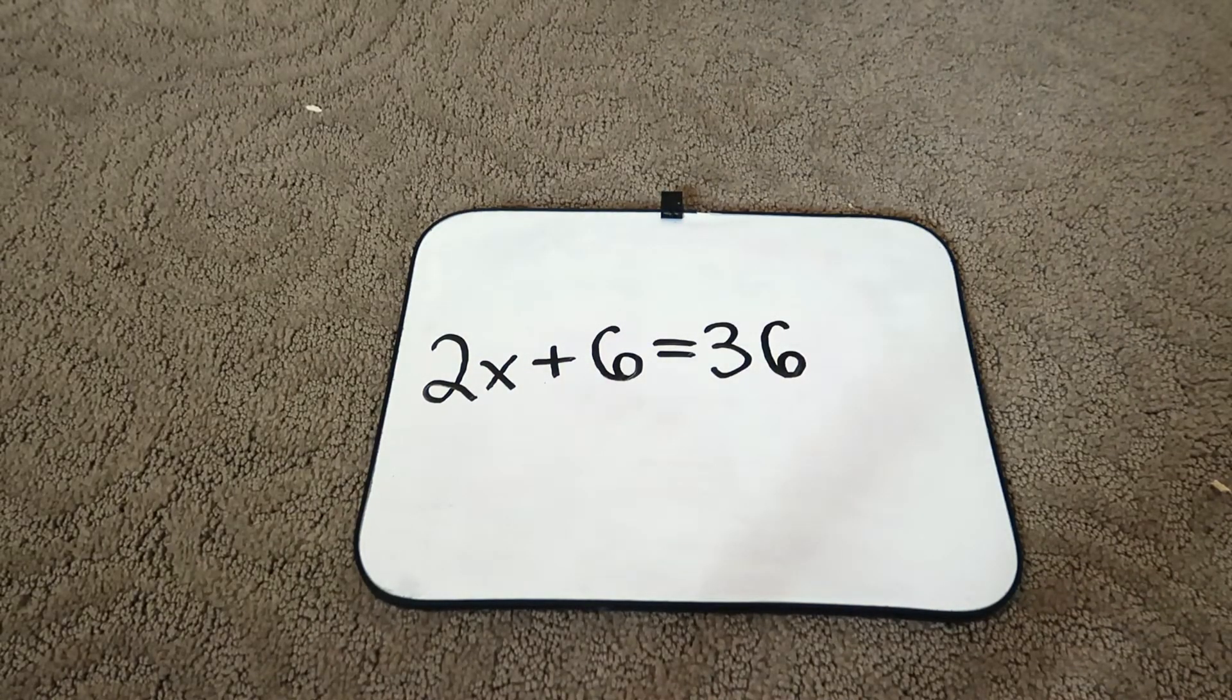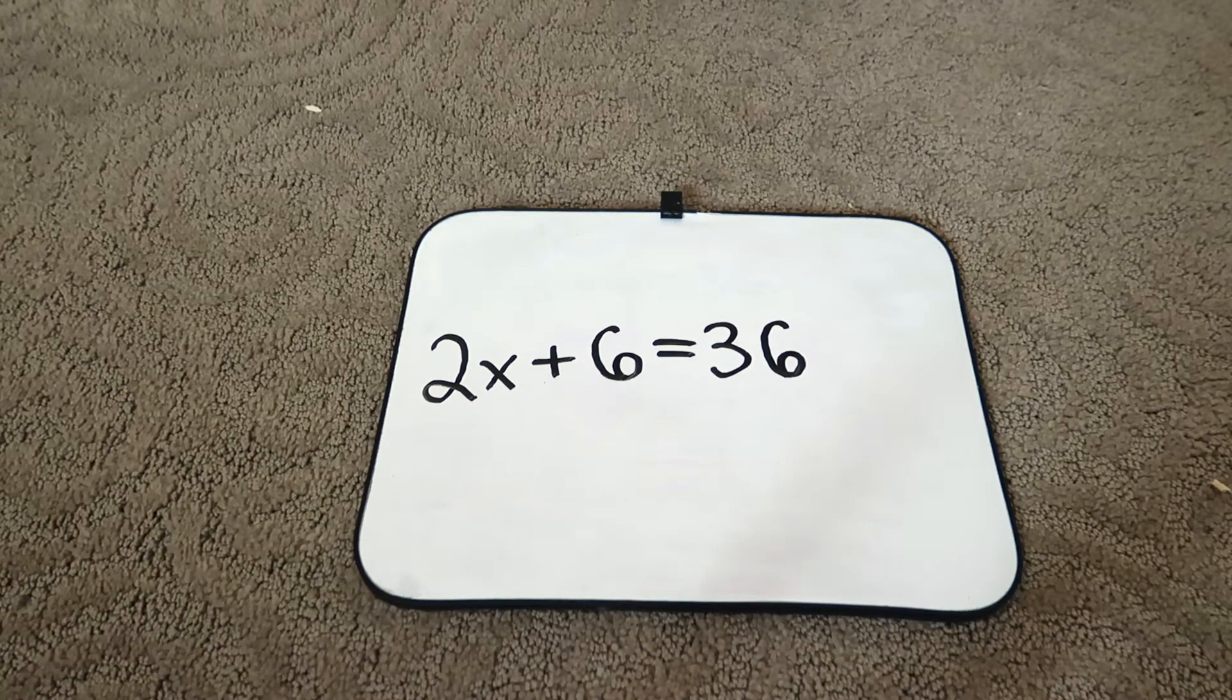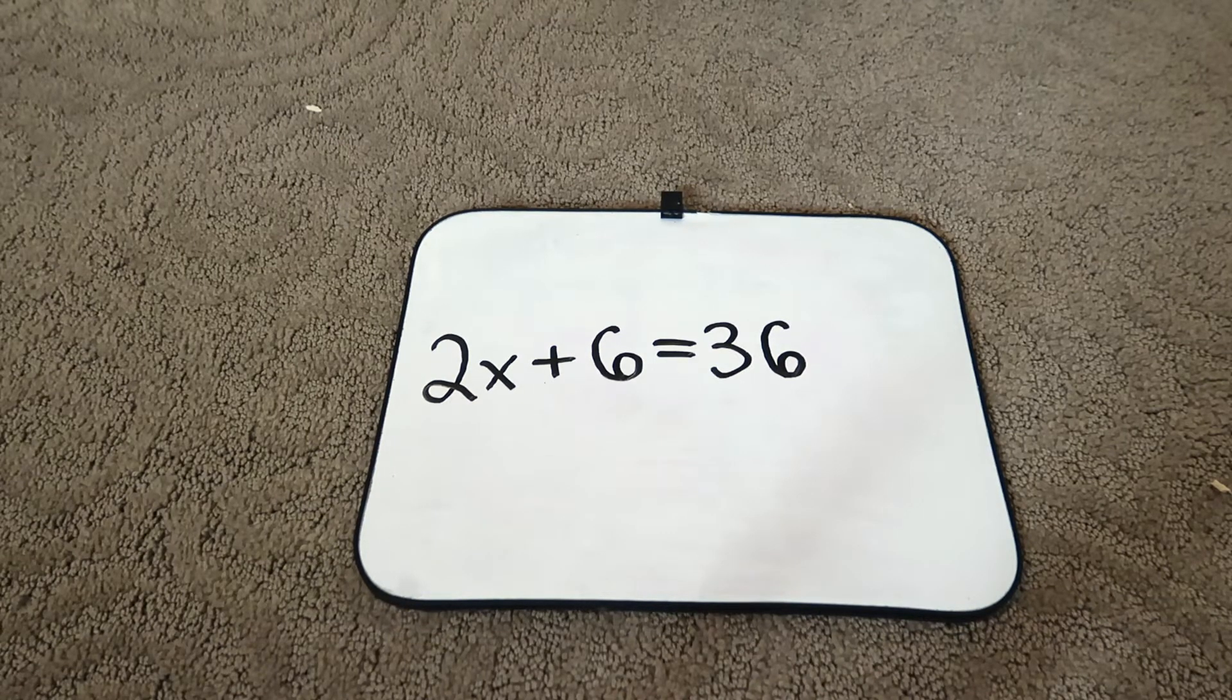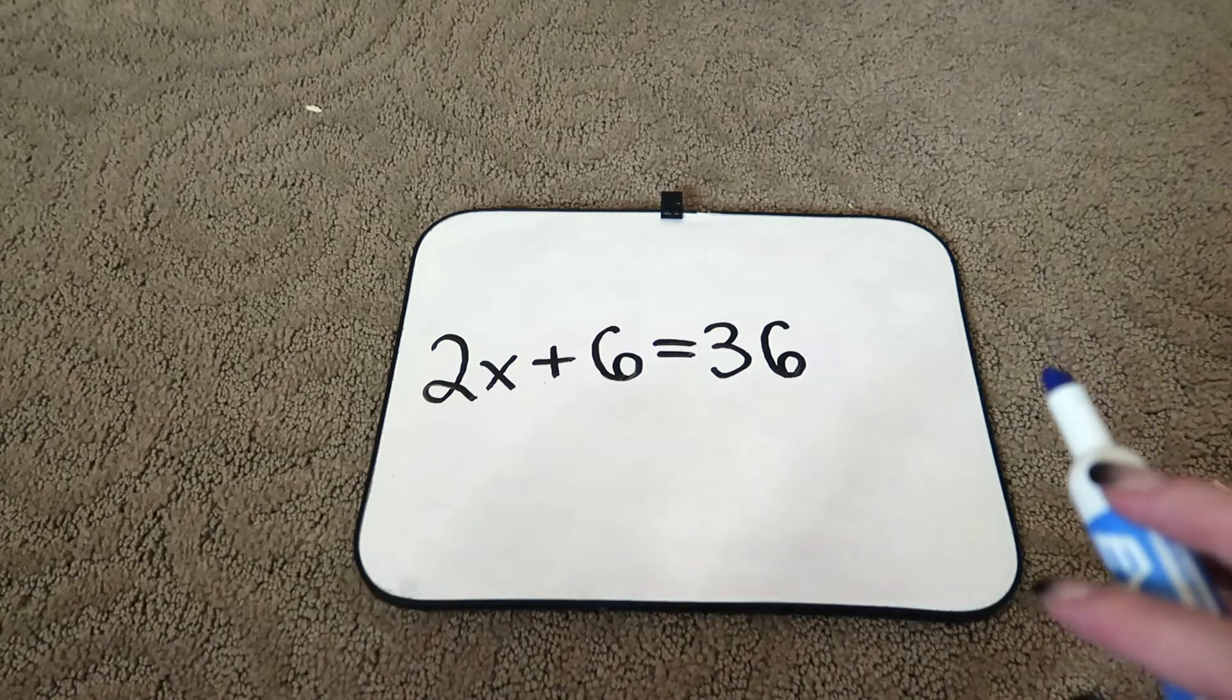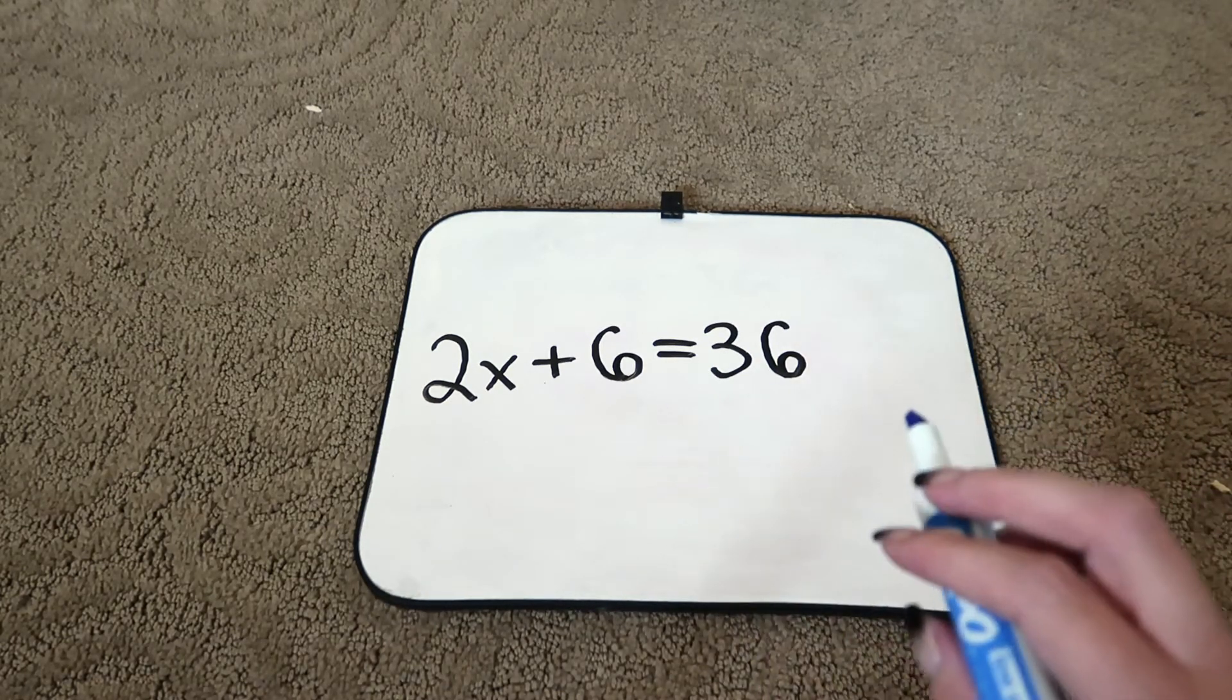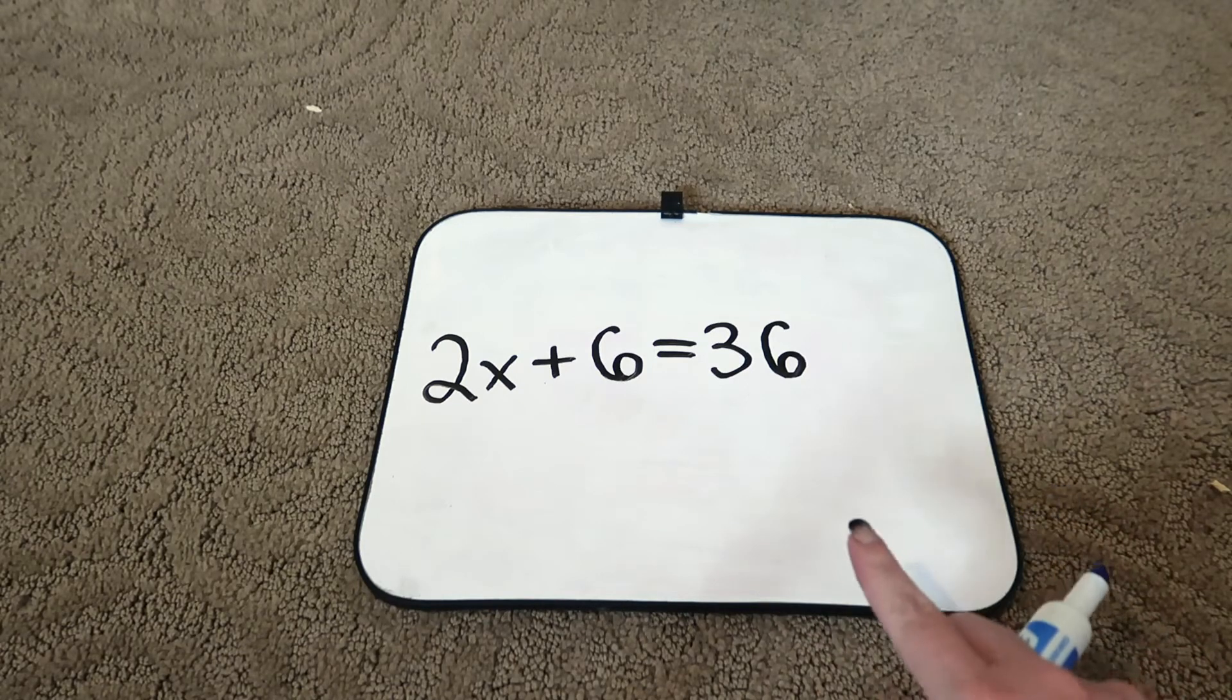Here is our algebra equation with one variable. The first thing that we have to do is get this equation equal. So what we do on one side, we have to do to the other.